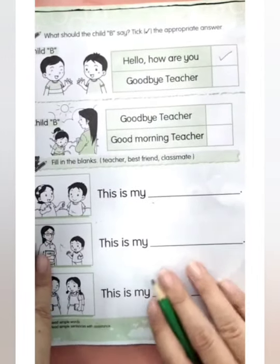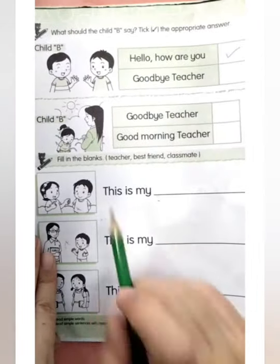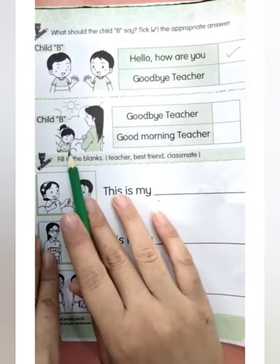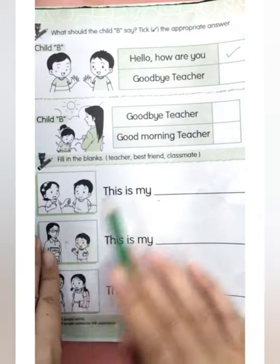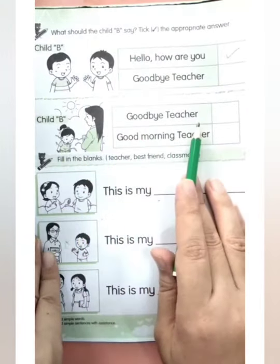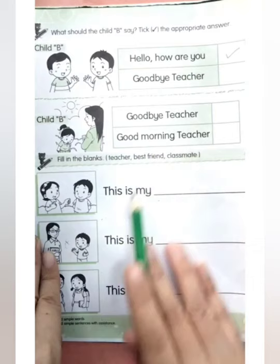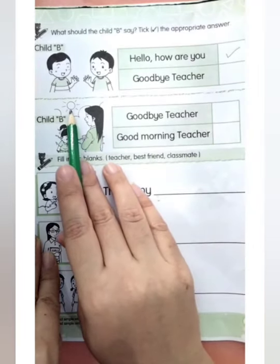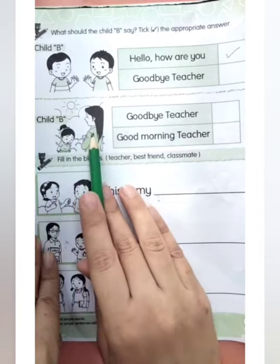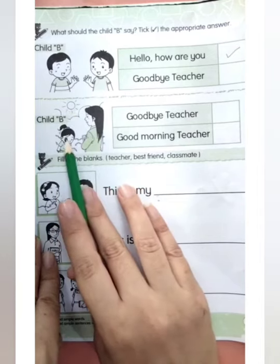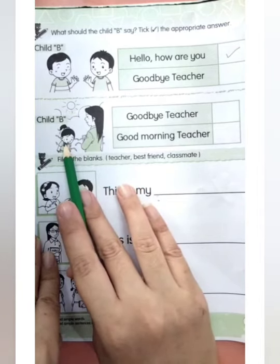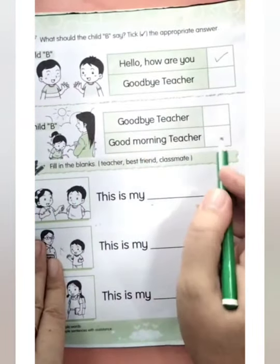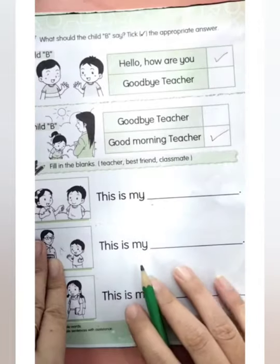Now look at Child B in the next picture. We're going to choose between 'goodbye teacher' or 'good morning teacher.' Look — there is a sunrise, and that one is the teacher. So she says 'good morning, teacher.' Very good — not goodbye. So you have to tick 'good morning teacher.'